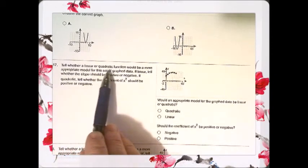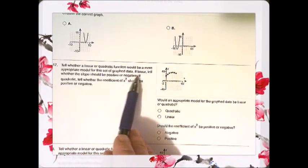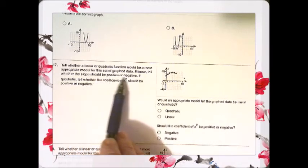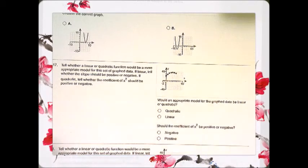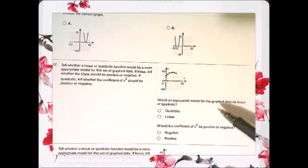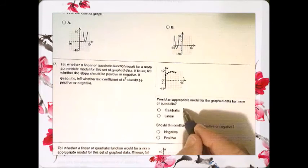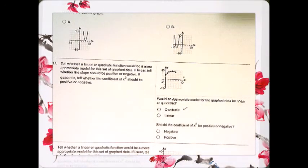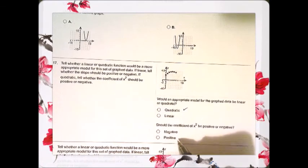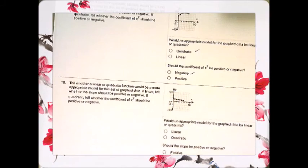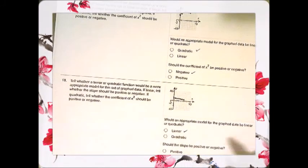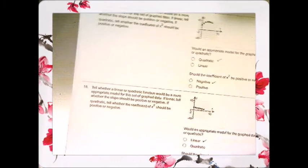Tell whether a linear, a quadratic would be more appropriate model for this. If linear, tell whether the slope should be positive or negative. If quadratic, tell whether the coefficient of x squared should be positive or negative. So, you're going to choose by looking at the shape of the graph, which one does it look like? Well, it looks more quadratic. And should the coefficient of x squared be positive or negative? Well, it opens down, which means that it is negative. The next one, well, it looks more linear. And it looks like it has a negative slope because the line goes down.